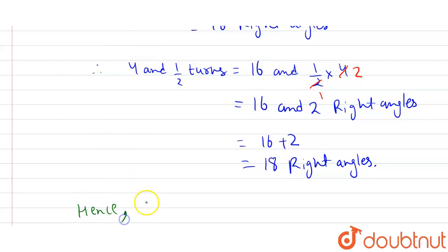Hence, 4 and a half turns will give us 18 right angles, which is the required answer.